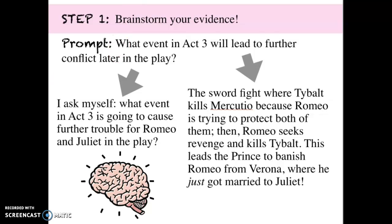I'm going to take you through the process it took me to put this together. Step one: brainstorm your evidence. The prompt is, what event in Act Three will lead to further conflict later in the play? I'm asking myself what evidence in Act Three is going to cause further trouble for Romeo and Juliet, because we know they have a tragic ending. I decided my answer was the sword fight where Tybalt kills Mercutio, Romeo seeks revenge and kills Tybalt, and the prince banishes Romeo from Verona where he just got married to Juliet.